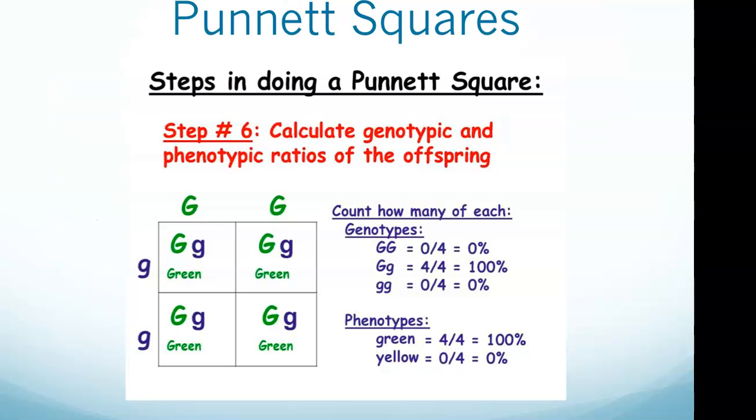Okay, Punnett squares. The Punnett square is a square diagram, as you can see here, that is used to predict the genotypes of a particular cross or breeding experiment. It is used to predict the probability of the offspring having a particular genotype.